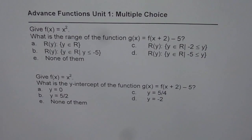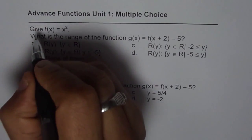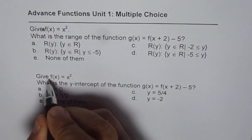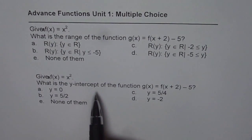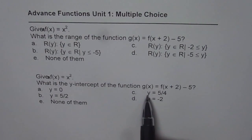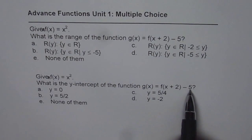Five choices are given to us. Now, I've extended this question and I've also included one more here. That is, given f(x) = x², what is the y-intercept of the function g(x) = f(x + 2) - 5?